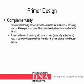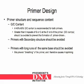Primers with complementarity with other primers, especially at the 3' end, need to be avoided to prevent the formation of primer dimers called cross-dimers. Regarding primer structure and sequence content: a 40 to 60% GC content is recommended for both primers. Greater than 3 repeats of G or C at the 3' end of the primer should be avoided to prevent primer dimer formation. Primers with secondary structure should be avoided. Primers with long runs of the same base should be avoided, as this prevents breathing of the primer, which may lead to mispriming.